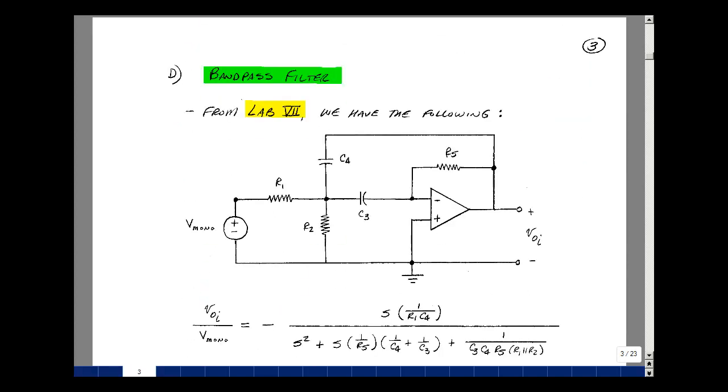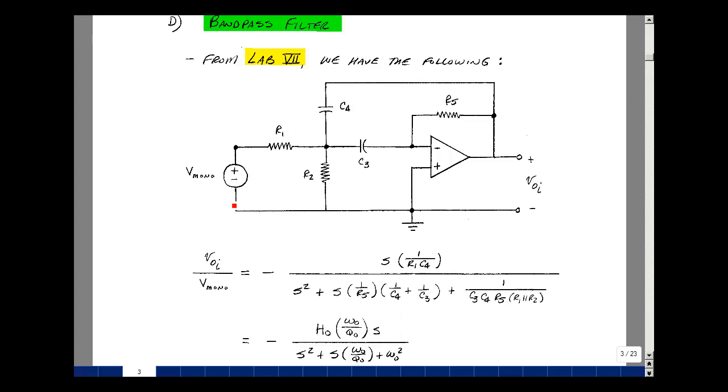Our next block is a bandpass filter. In Lab 7, we use this structure to create a second-order bandpass filter with a transfer function that's shown here. Here we've got our monoral summed inputs as the input to this circuit. The output then would be one of three bandpass filters. Here's the transfer function that we derived. We showed that it was a second-order bandpass filter.